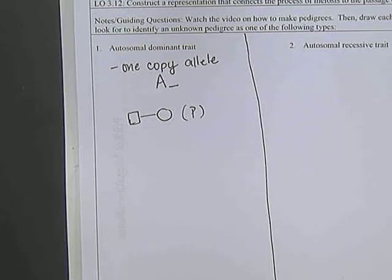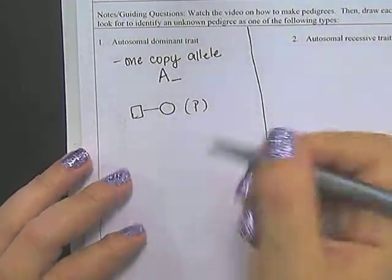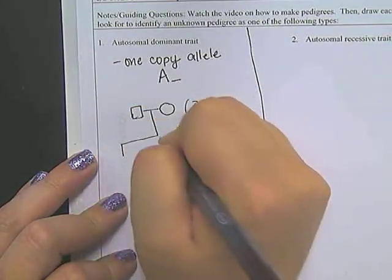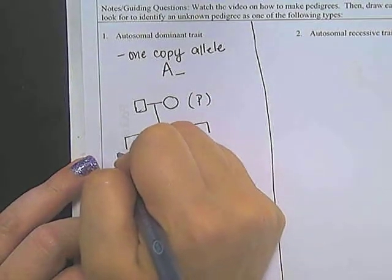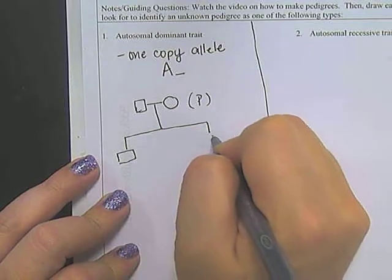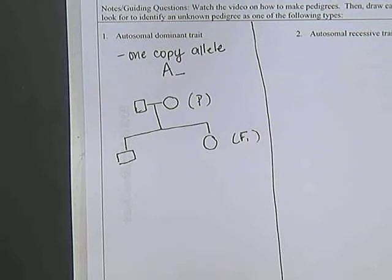And then what we're going to do is we're going to track and look for characteristics of these traits so that you can look at one and identify what it is. Then in class, what we'll do is we'll start applying mathematical probability to this in addition to identifying these conditions. So we have our male and a female, and for this example, we're going to make it simple. We're just going to draw two offspring. Let's go ahead and just draw a male. So in other words, a son and a daughter. And this is going to be our F1 generation.